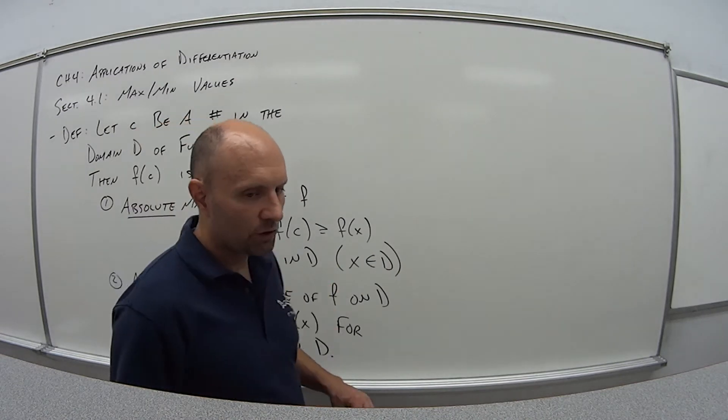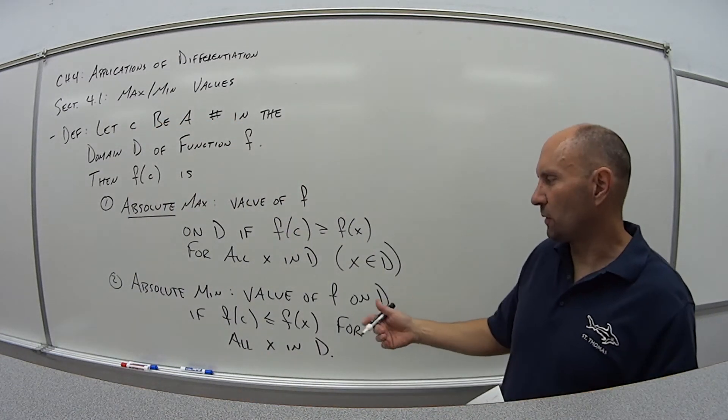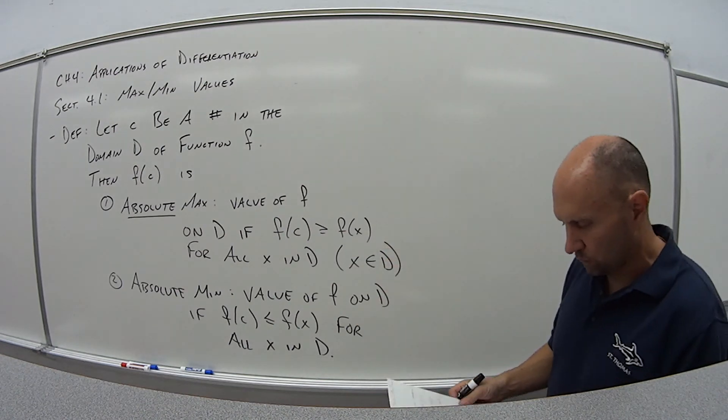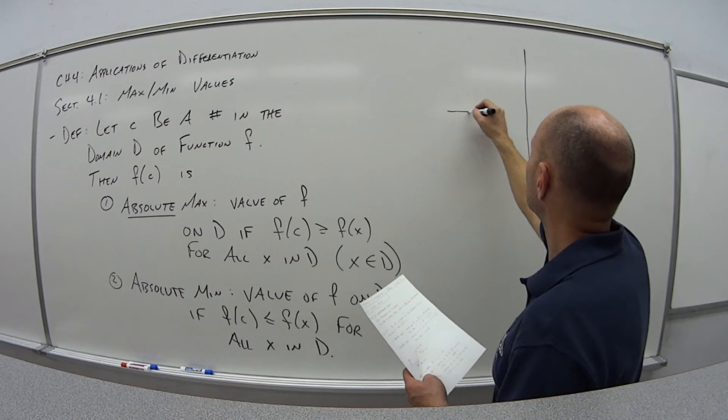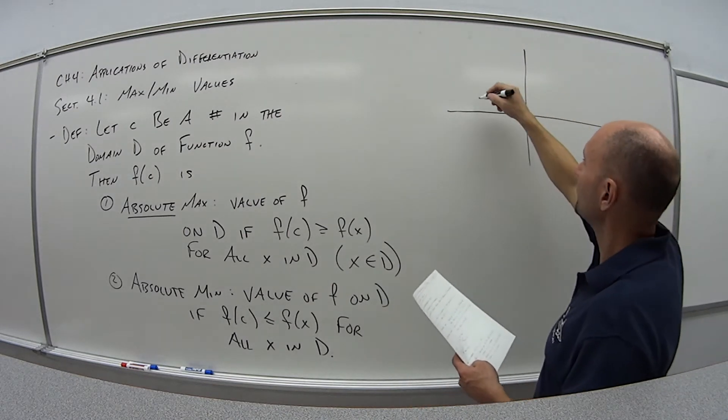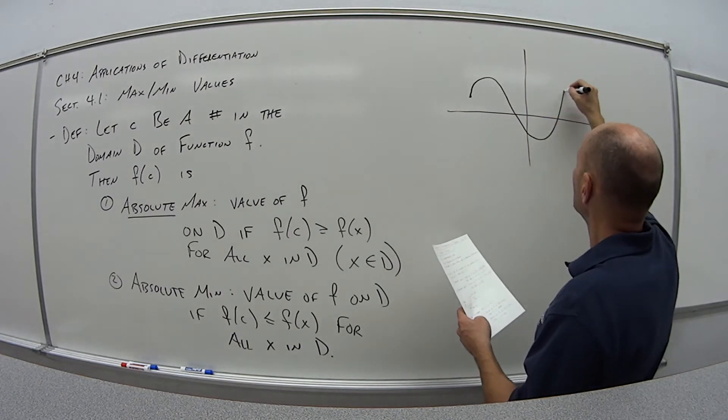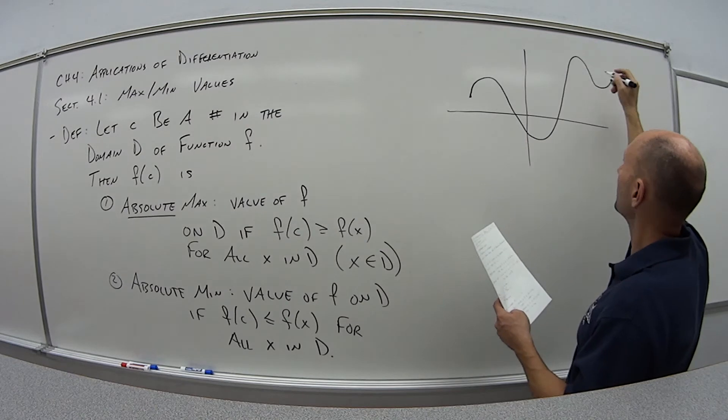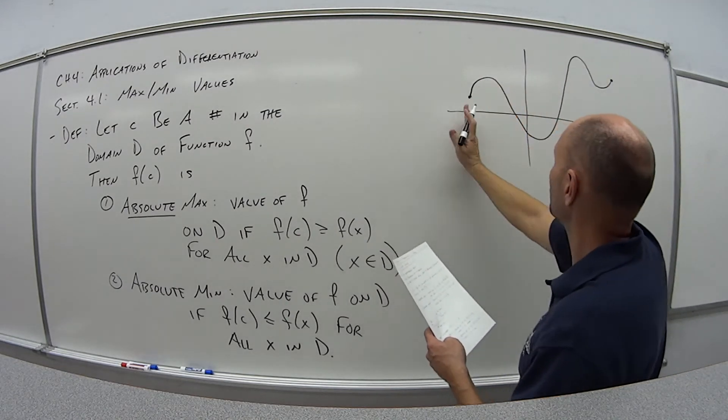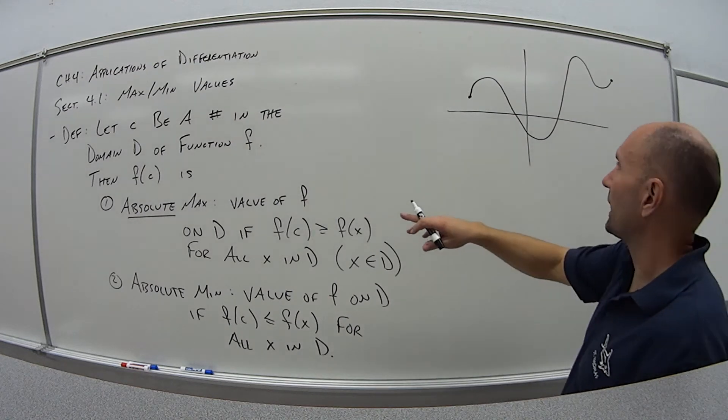So if you have some function, and there's no other value that's less than some other value in the function, that's the absolute min. So graphically, what does this look like? So let's say I have some function here, goes up, comes down, goes back up, comes back down, whatever. Maybe this is my domain. It goes from here to here, and that's it.